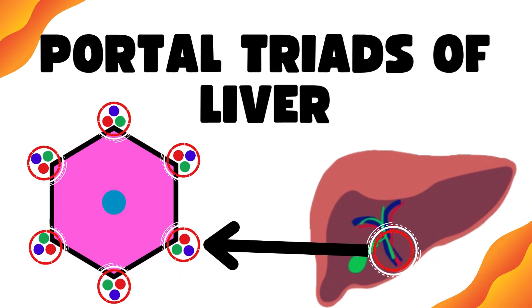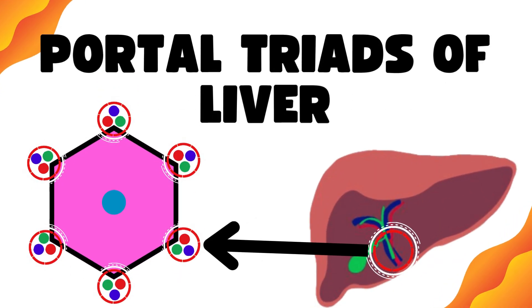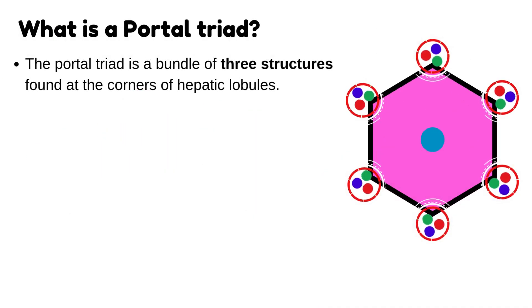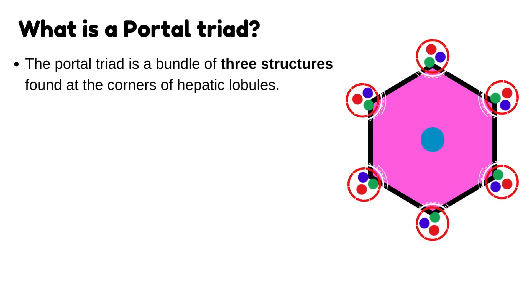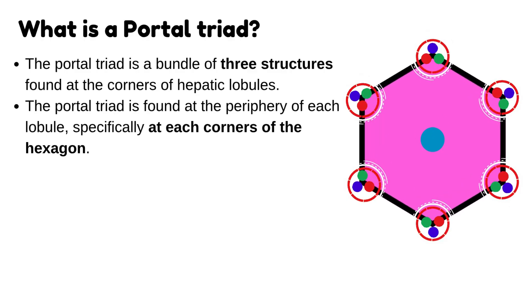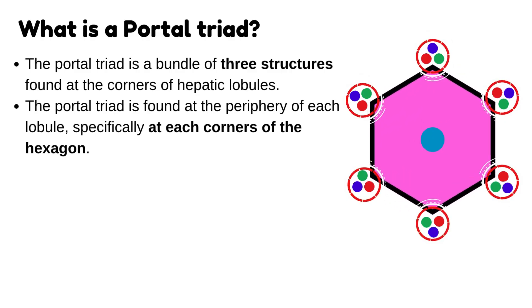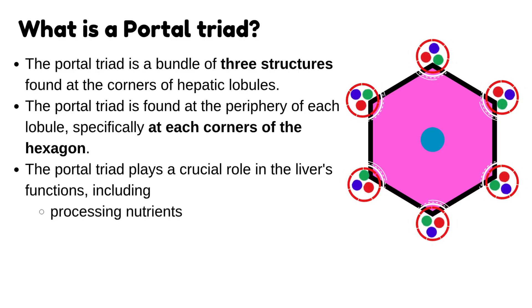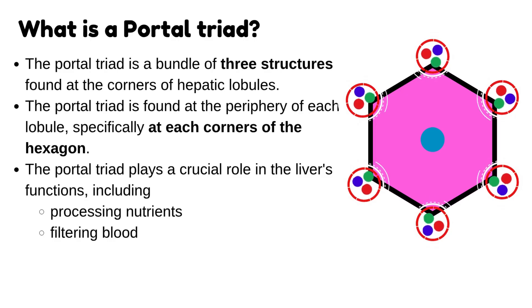The portal triads of the liver. What is a portal triad? The portal triad is a bundle of three structures found at the corners of hepatic lobules. It is found at the periphery of each lobule, specifically at each corner of the hexagon. The portal triad plays a crucial role in the liver's functions, including processing nutrients, filtering blood, and producing bile.